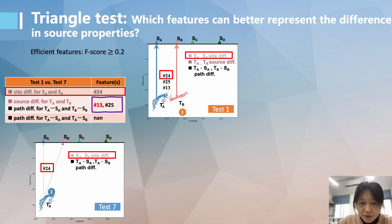And so by comparing the differences and the same features, we know that given the difference of features is mainly contributed by the source effect, we are able to single out the features that are likely to represent the difference in the source property.